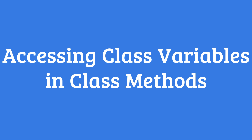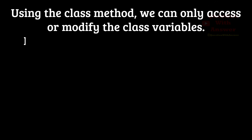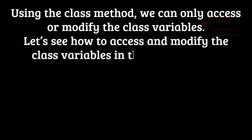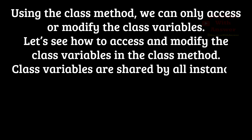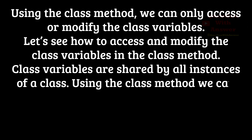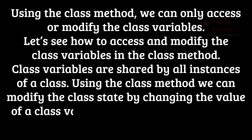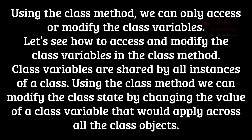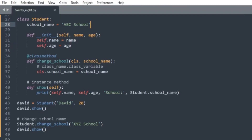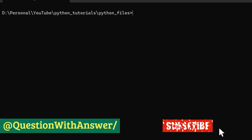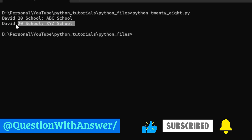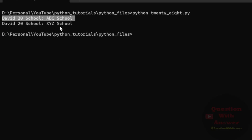Now let's look at accessing class variables in class methods. Using the class method, we can only access or modify class variables. Class variables are shared by all instances of a class, and using the class method we can modify the class state by changing the value of a class variable that applies across all class objects. In this example, we created a class method change_school using the @classmethod decorator, accessing the class variable school_name and changing its value inside the class method. Run python 20_8.py to see the result.